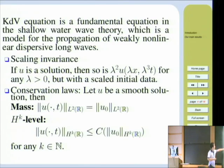The other one is the conservation laws. Actually, there are infinite conservation laws for the KdV equations. This one is mass, and this is the H^s level. It means the H^s norm of the solution is bounded by that of the initial data. So we can get an a priori bound from the equation itself.